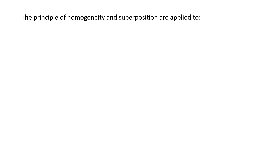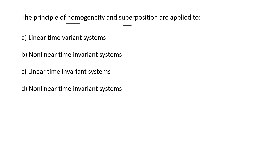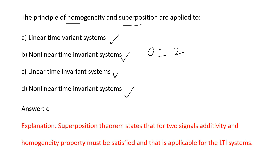Next: the principle of homogeneity and superposition are applied to — options are: linear time variant systems, non-linear time invariant system, linear time invariant system, non-linear time invariant system. The superposition theorem states that the overall output is the summation of two or more inputs, and the homogeneity property must also be satisfied. These apply to linear time invariant systems. So option C is the right answer.